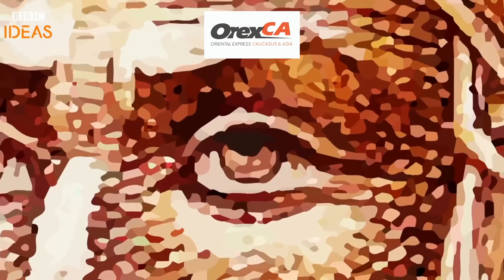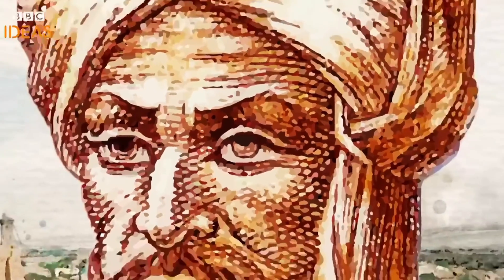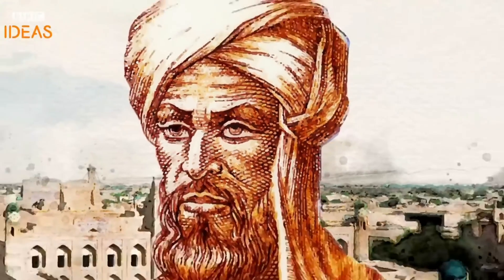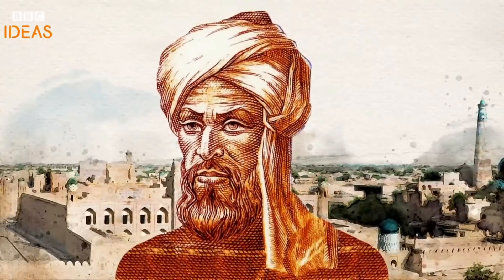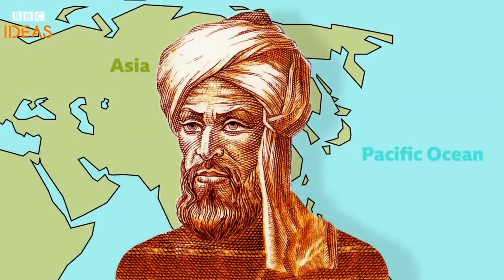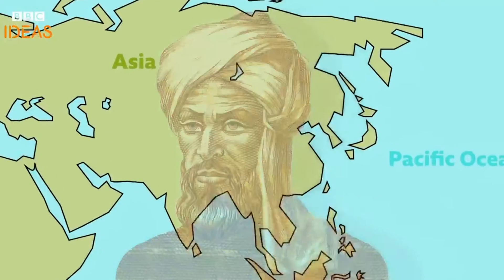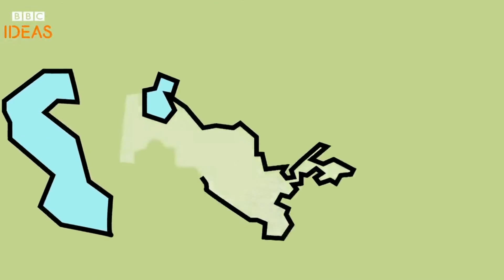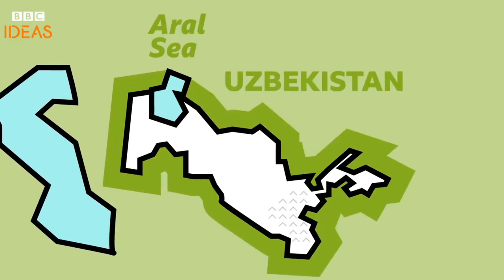The word algorithm comes from the name of a Persian mathematical genius, Muhammad ibn Musa al-Khawarizmi. He was born around 780 AD in the region now known as Uzbekistan. His name suggests he came from Khawarizma.